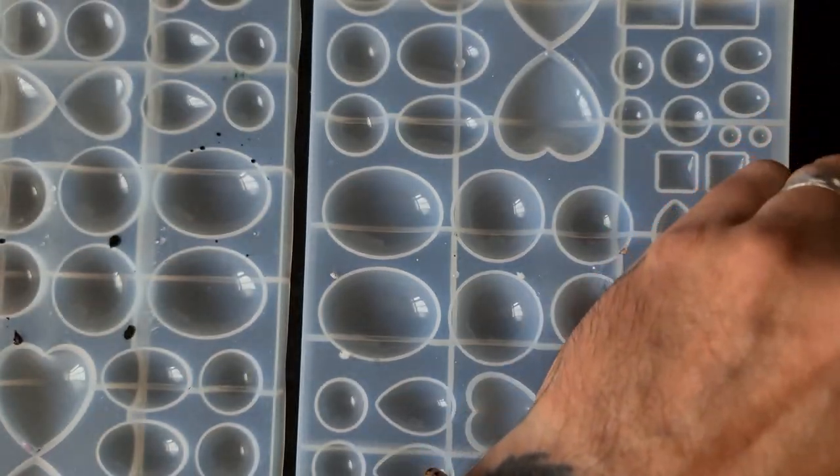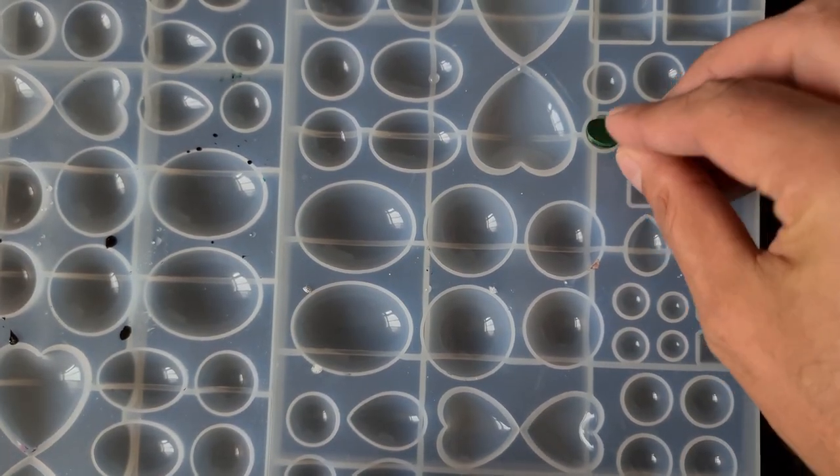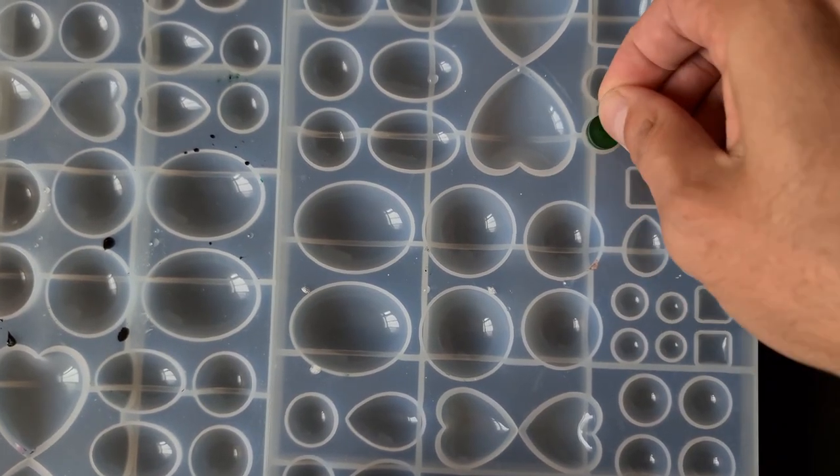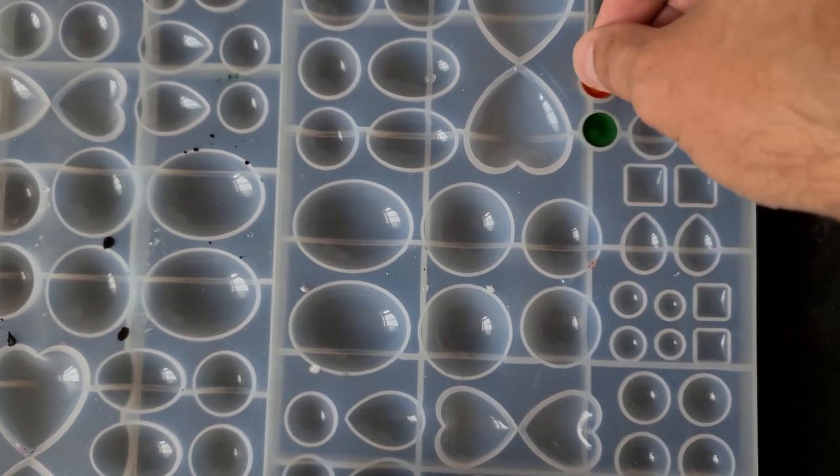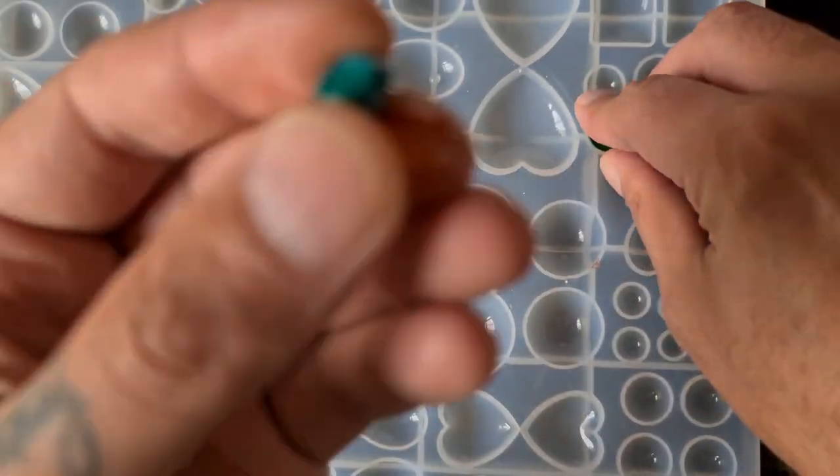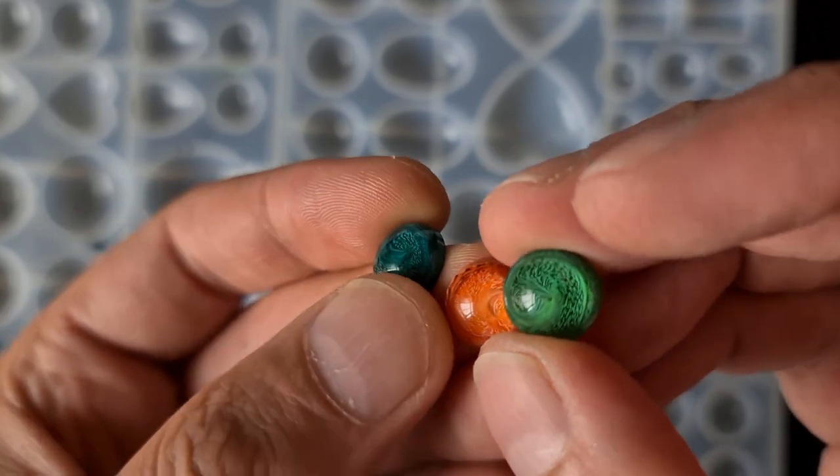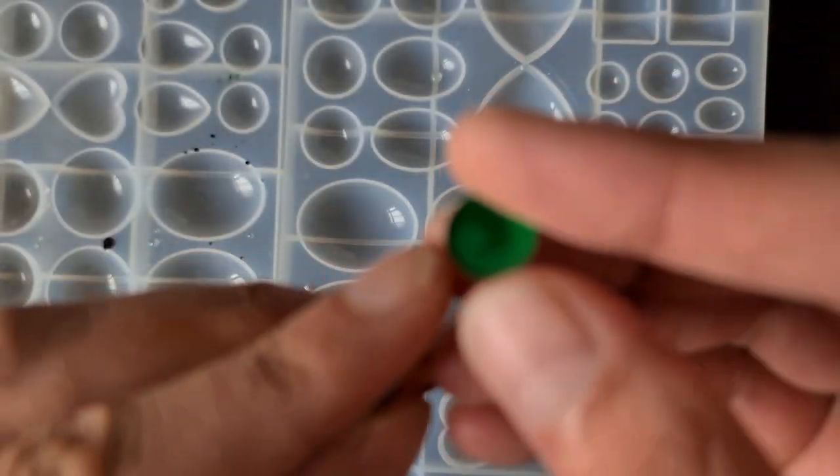And what you can do, because we've only got a couple of cavities in each tray mold, so what you can do is you can actually just create loads of these and then make your own mold. I've shown how to do that in previous videos. Just make sure that you flatten the back.